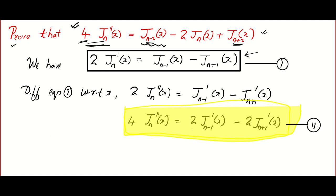I'm going to consider the two terms of equation 2. Look at equation 1 properly — they both look the same, but are you able to see that n is being replaced with n-1? Jn' is there, but it's Jn-1. And if you look at the next term, n is being replaced with n+1. The minute you realize that, you'll be able to solve this problem.